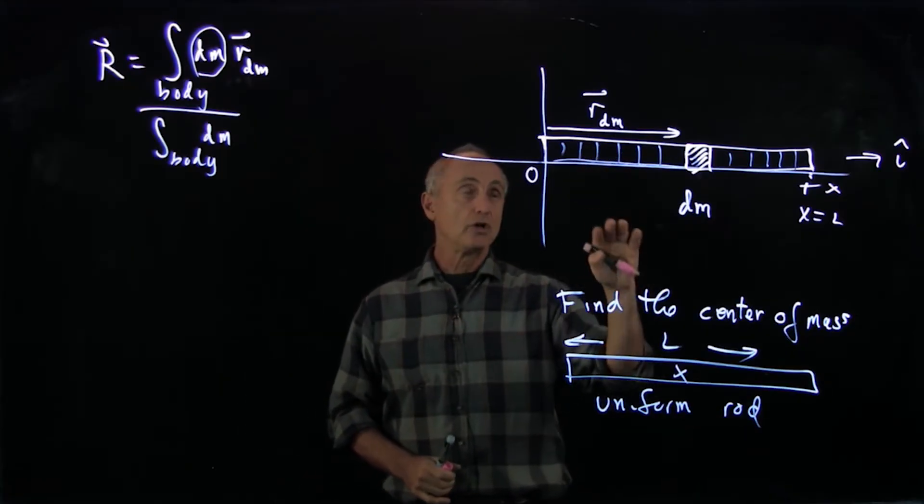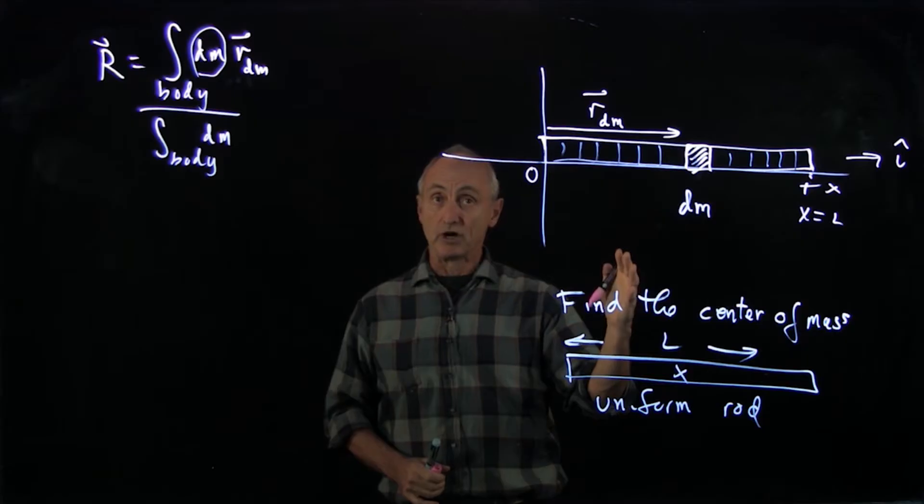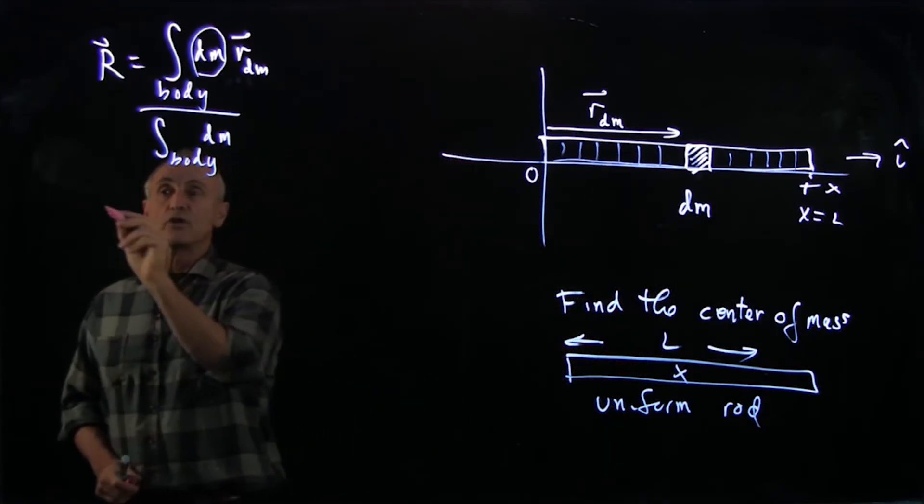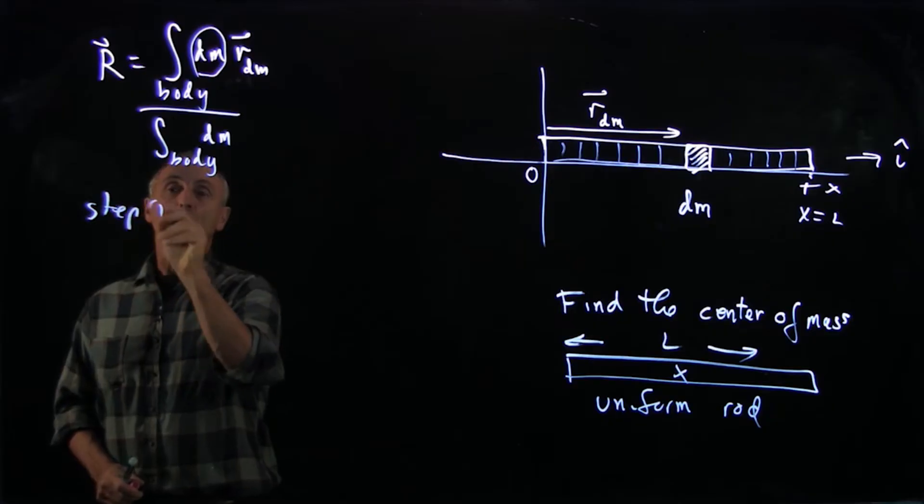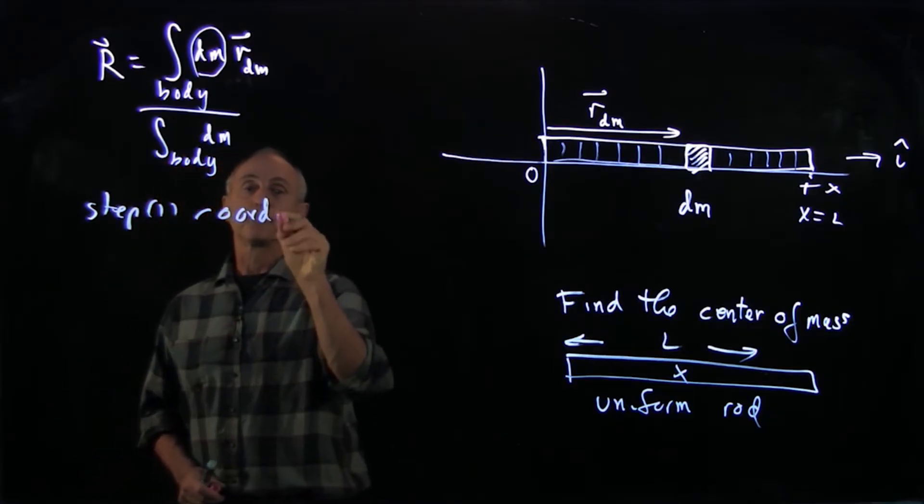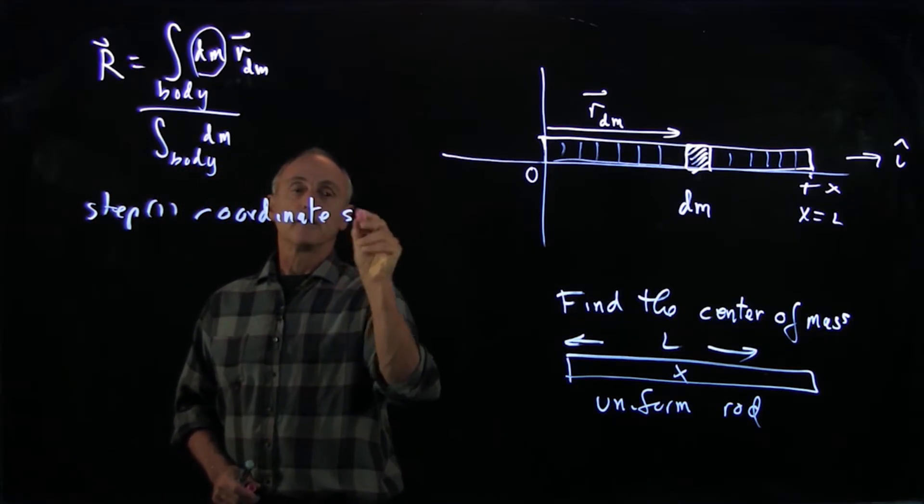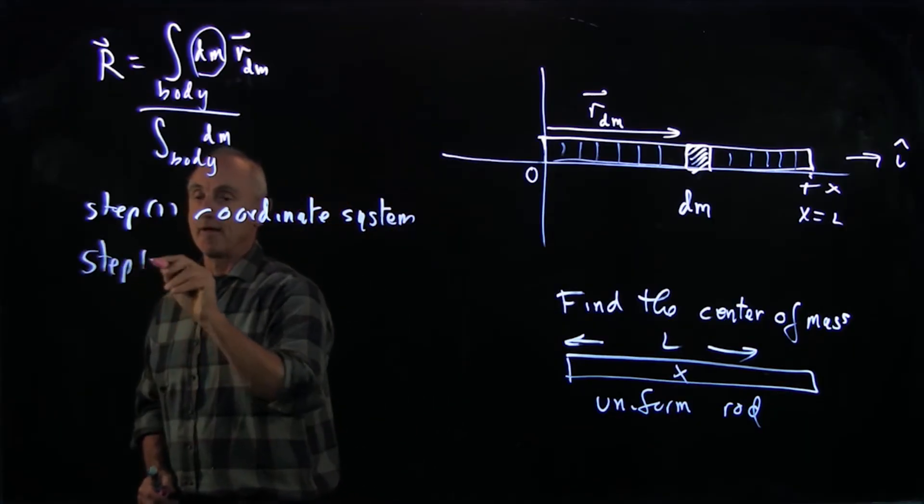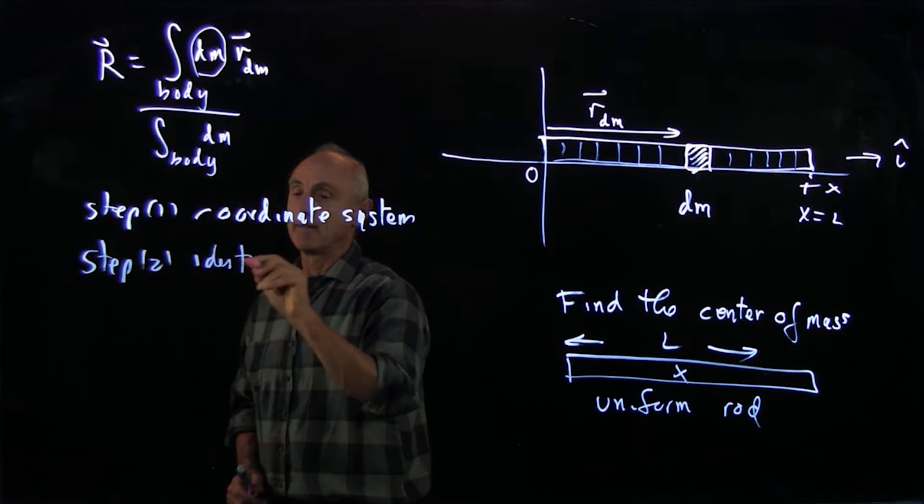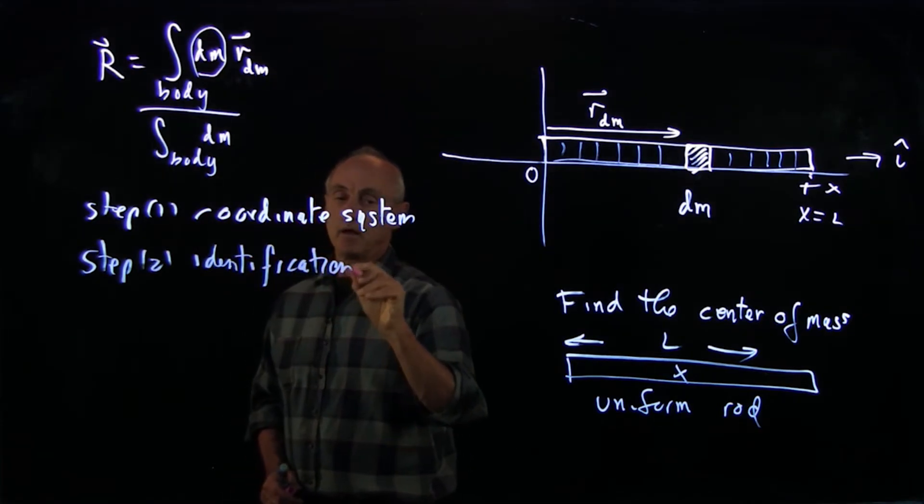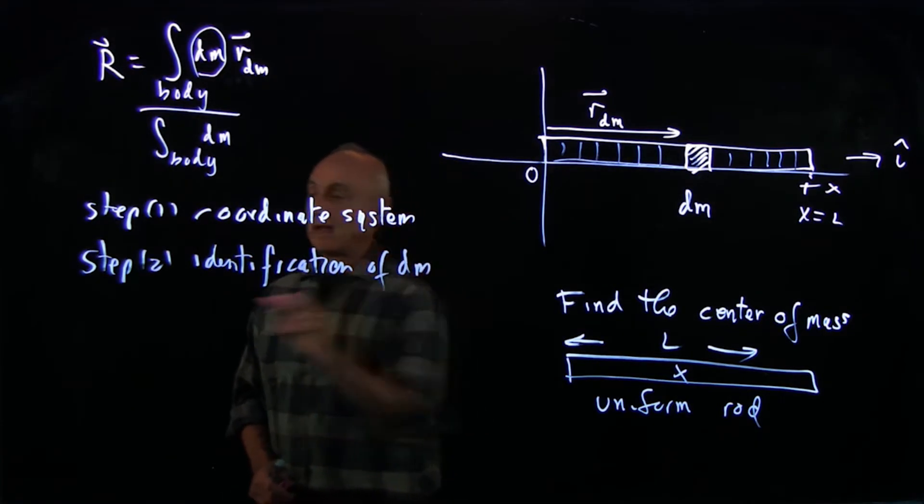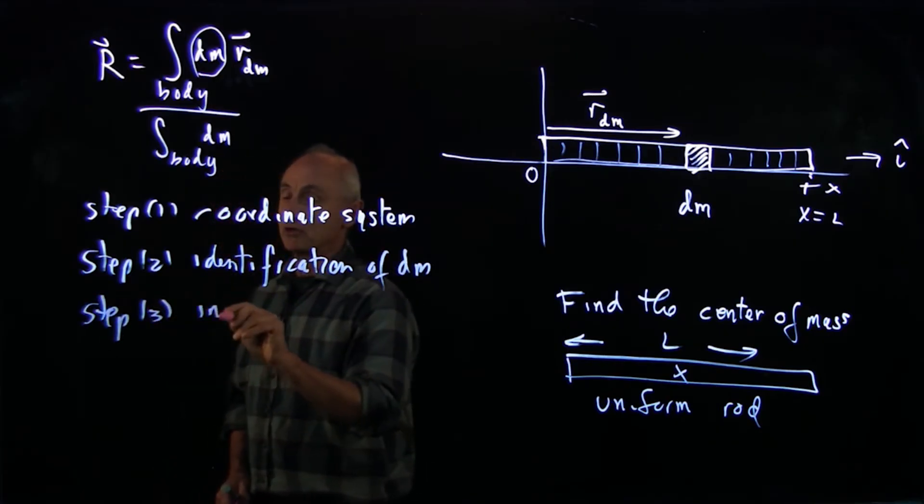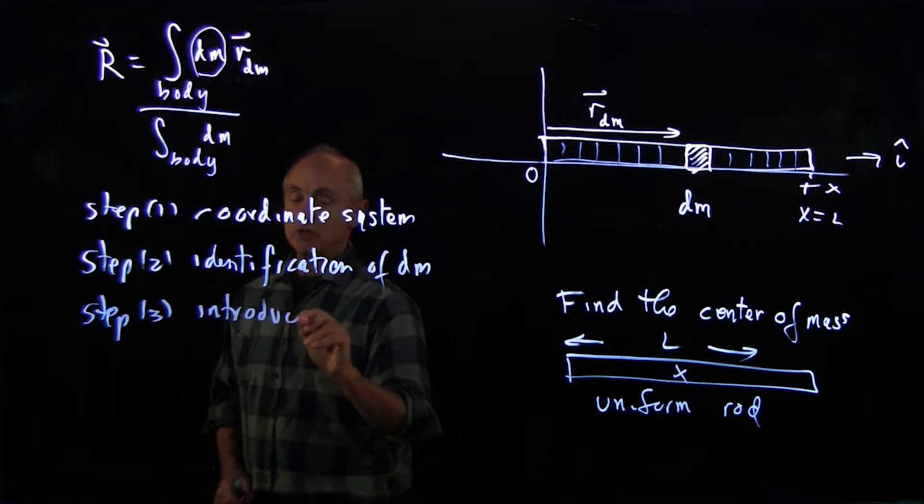The next step is to introduce an integration variable for both of these quantities. So step one was the coordinate system. Step two was the identification of dm. And step three, and I think this is absolutely the crucial one, is to introduce the integration variable.